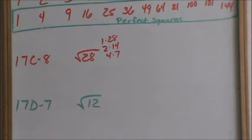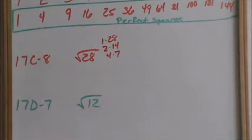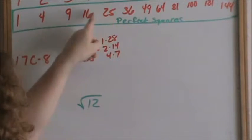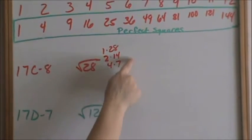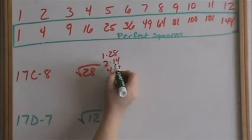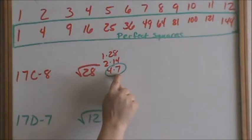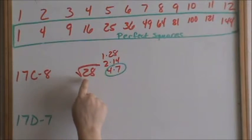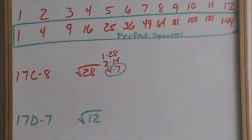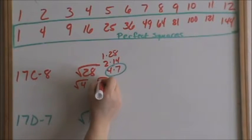Those are all the factors of 28. Which set of numbers has a perfect square in it? Remember, this green box lists all the perfect squares. Out of all these 6 numbers, the only set that has a perfect square is 4 times 7. Since these factors of 4 times 7 has a perfect square — 4 is a perfect square — these are the factors we want to use. So we are now going to break up the square root of 28 into the square root of 4 times the square root of 7.